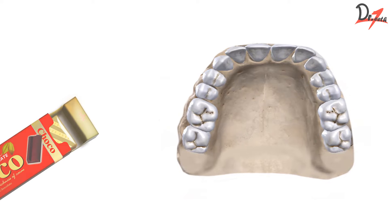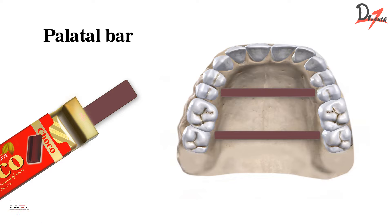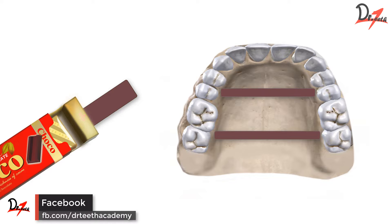So let us suppose we have a chocolate bar. If I take a single bar, that will be a palatal bar. If I take two chocolate bars, it will be a double palatal bar.